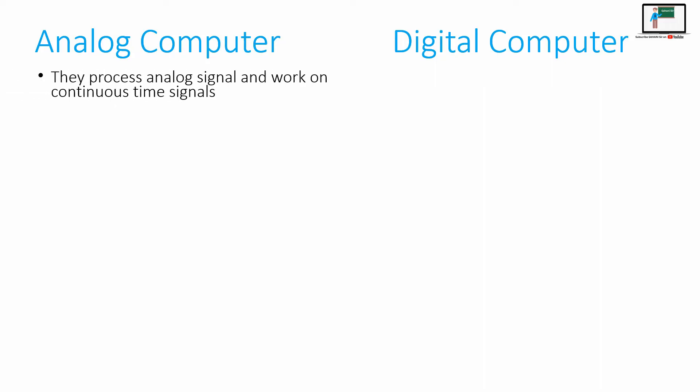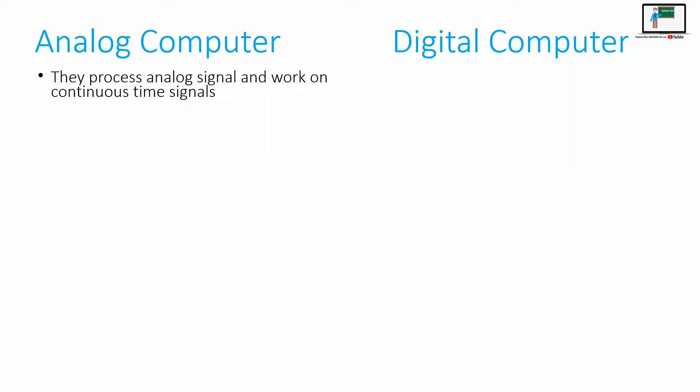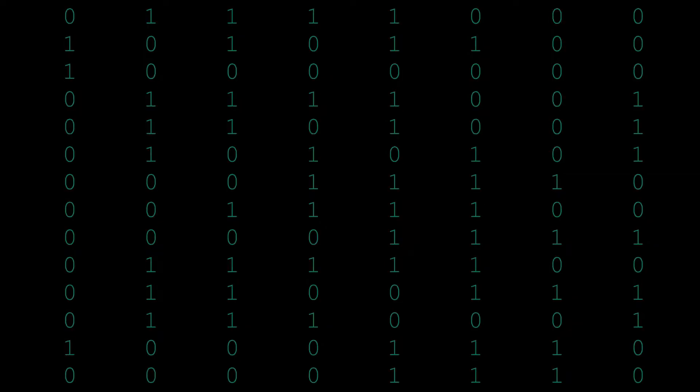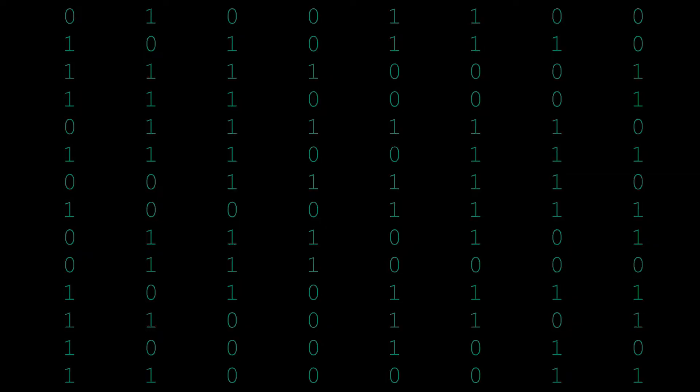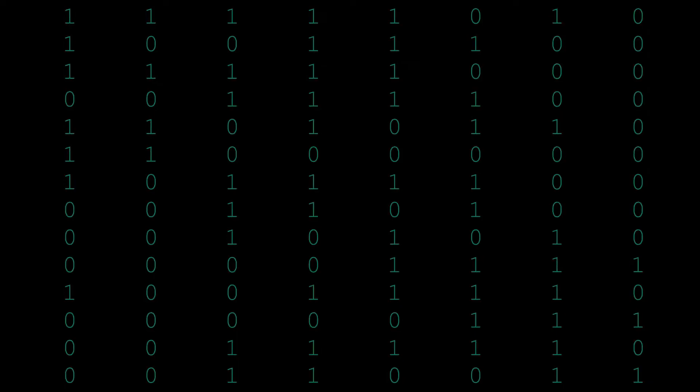Analog computers process analog signals and they work on continuous time signal. They work on continuous form of data that is not changeable in nature. Similarly, digital computers work on digital signals or they process the discrete type of data — basically the binary digits like 0 and 1. Such computers are digital computers that process binary numbers.